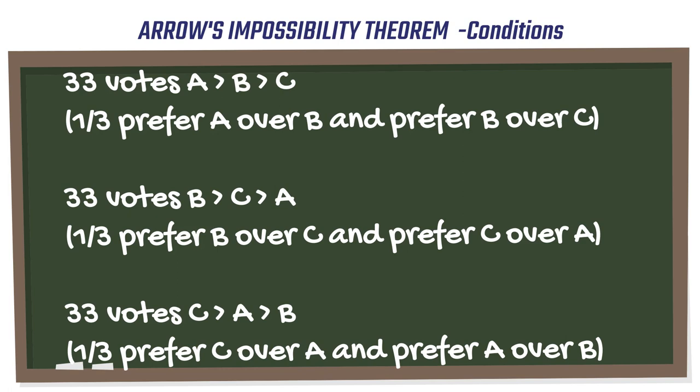Unrestricted domain. Voting must account for all individual preferences. Social ordering. Each individual should be able to order the choices in any way and indicate ties.